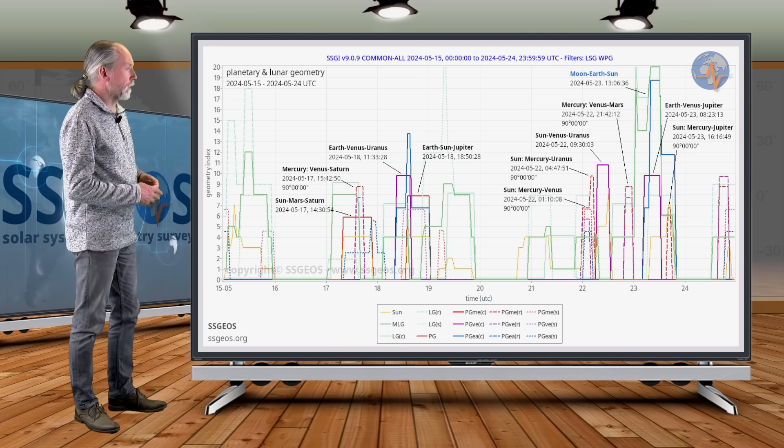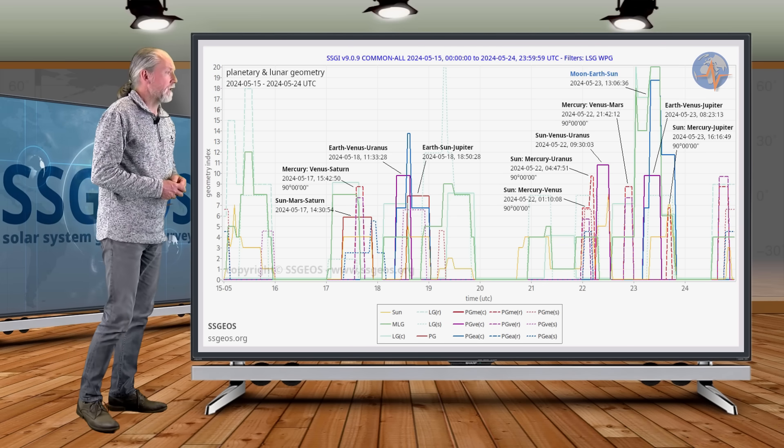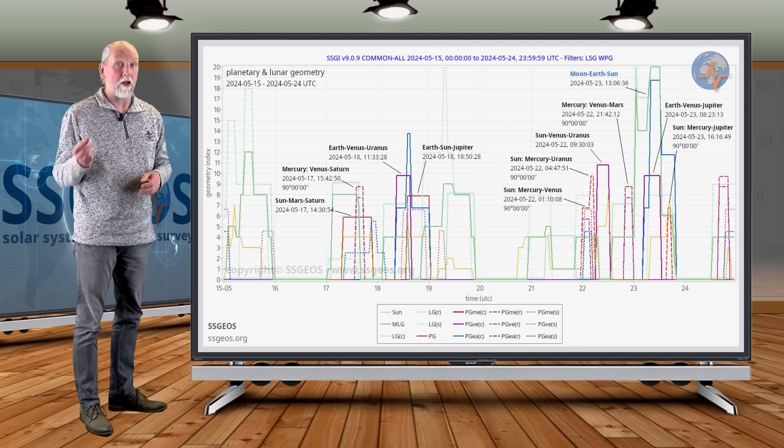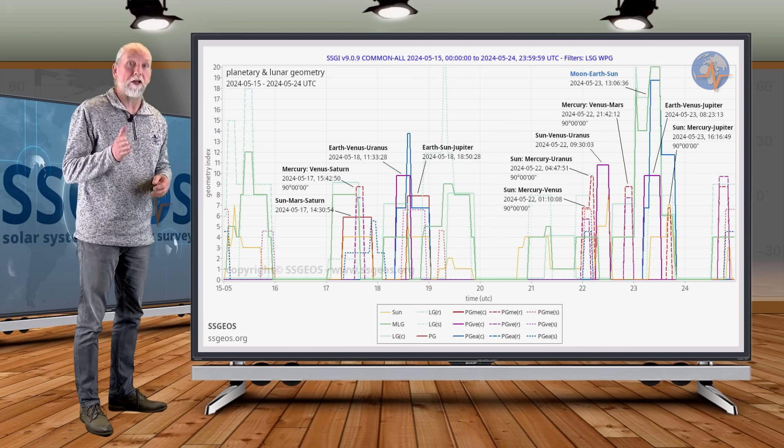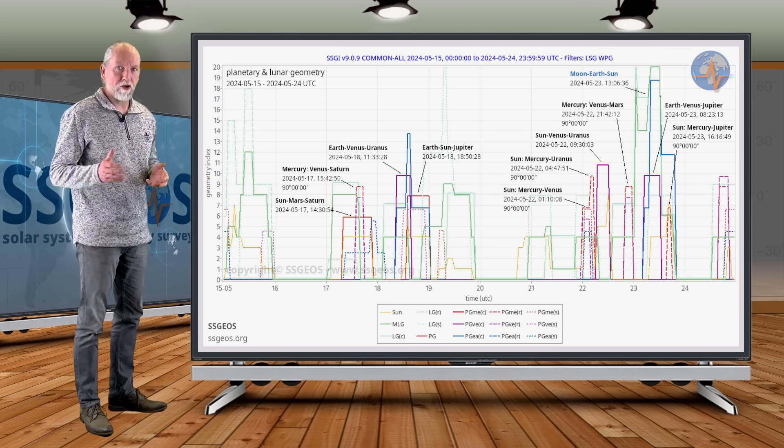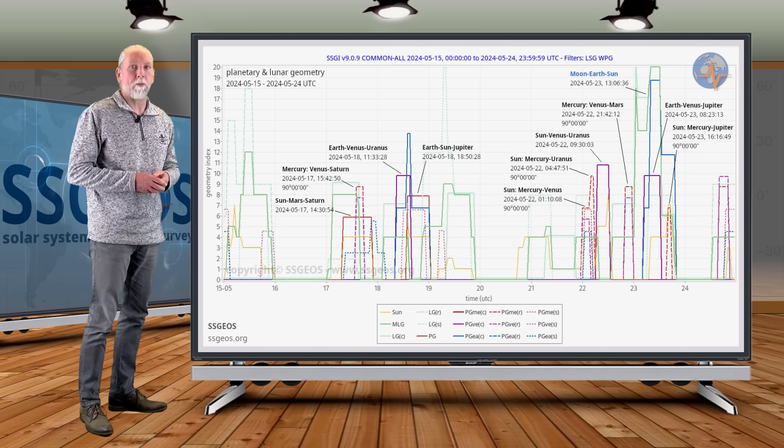And then Earth, Venus, Uranus on the 18th. That is a critical conjunction. That can result in a magnitude seven earthquake. Last time the Earth aligned with Venus and Uranus, we did have a magnitude seven earthquake within about two days. So that tells you something about the potential of that planetary geometry.